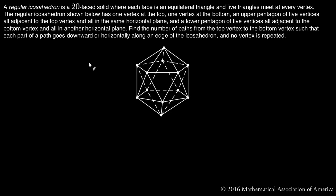Find the number of paths from the top vertex to the bottom vertex such that each path goes downward or horizontally along an edge of the icosahedron and no vertex is repeated.